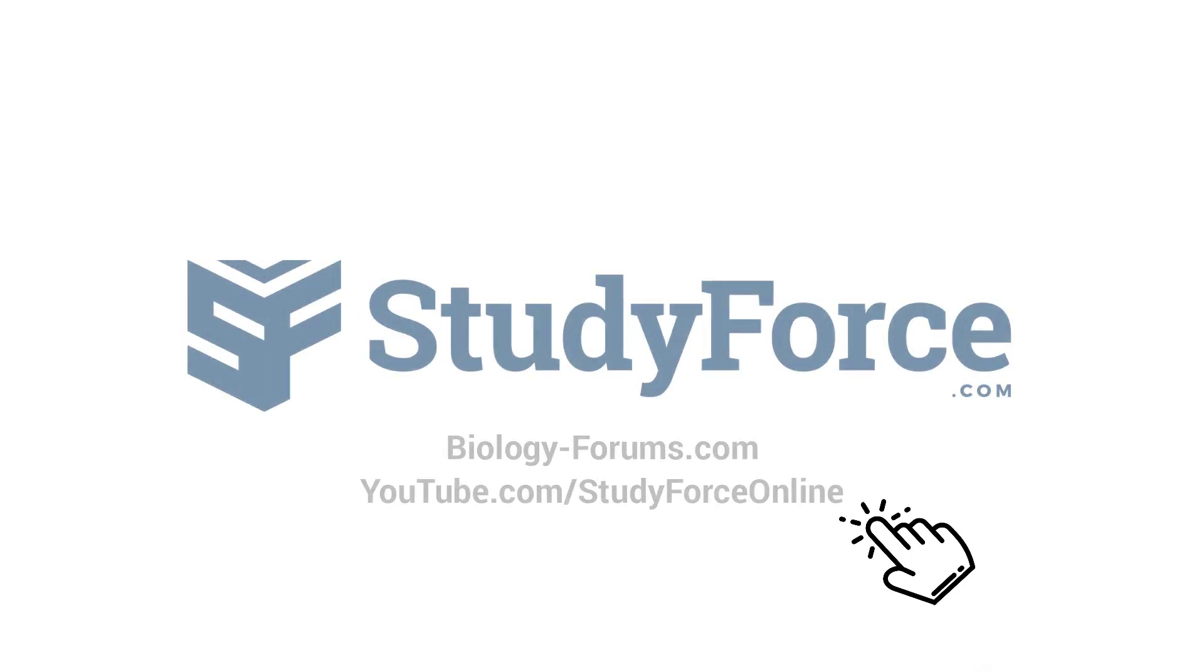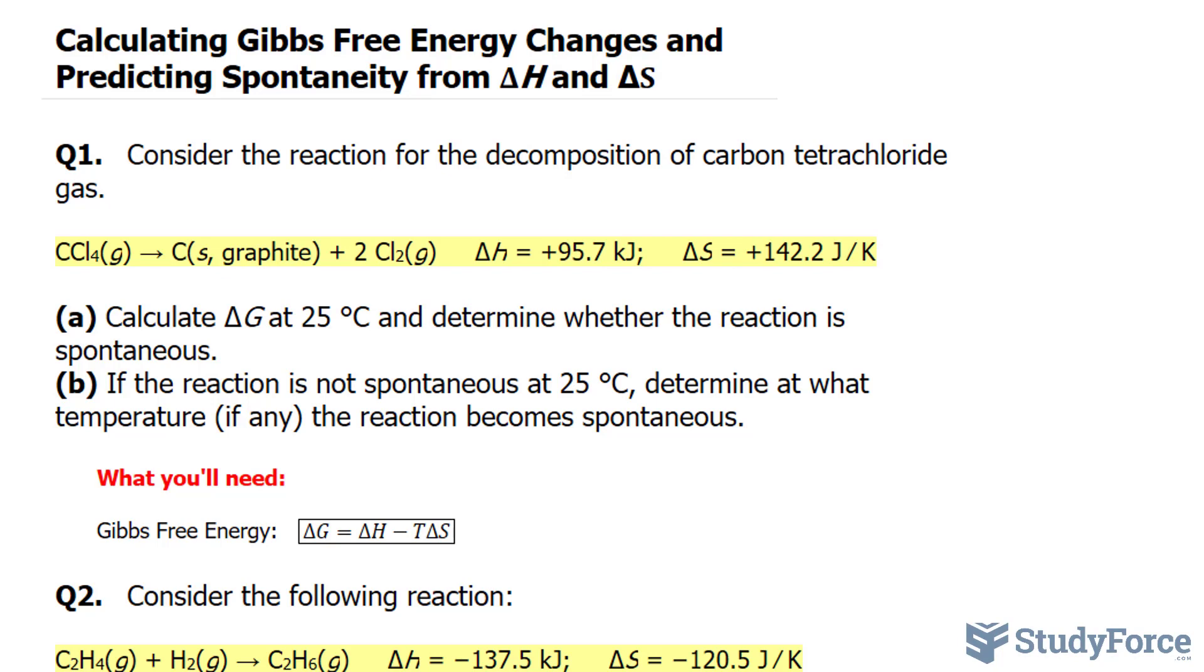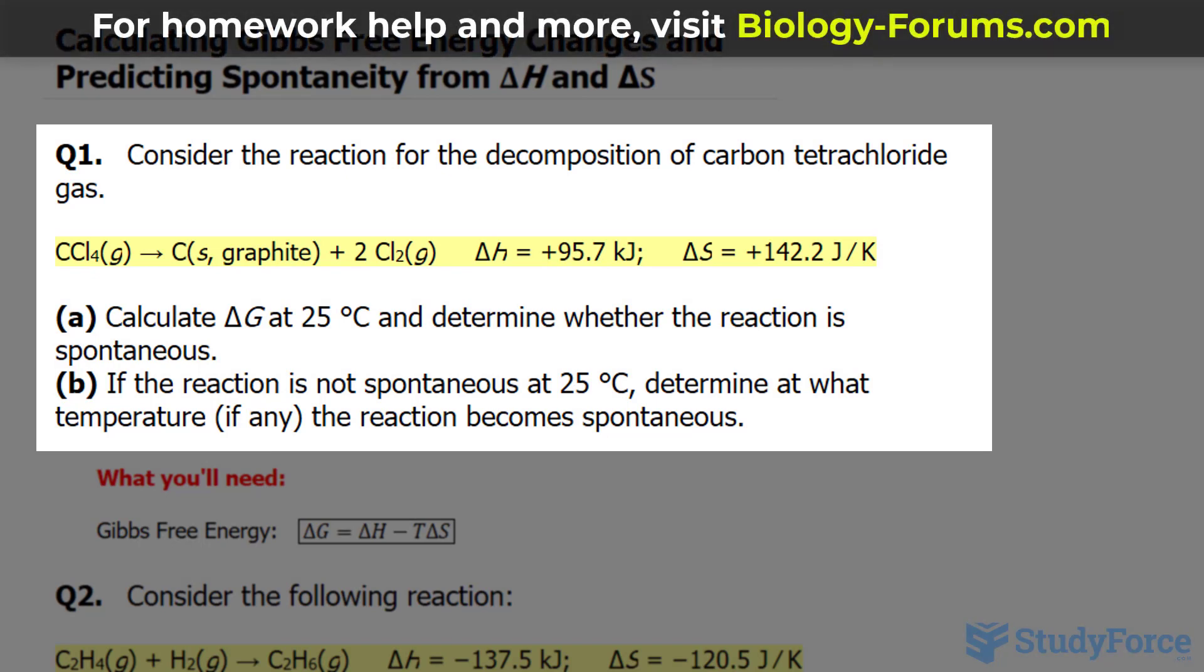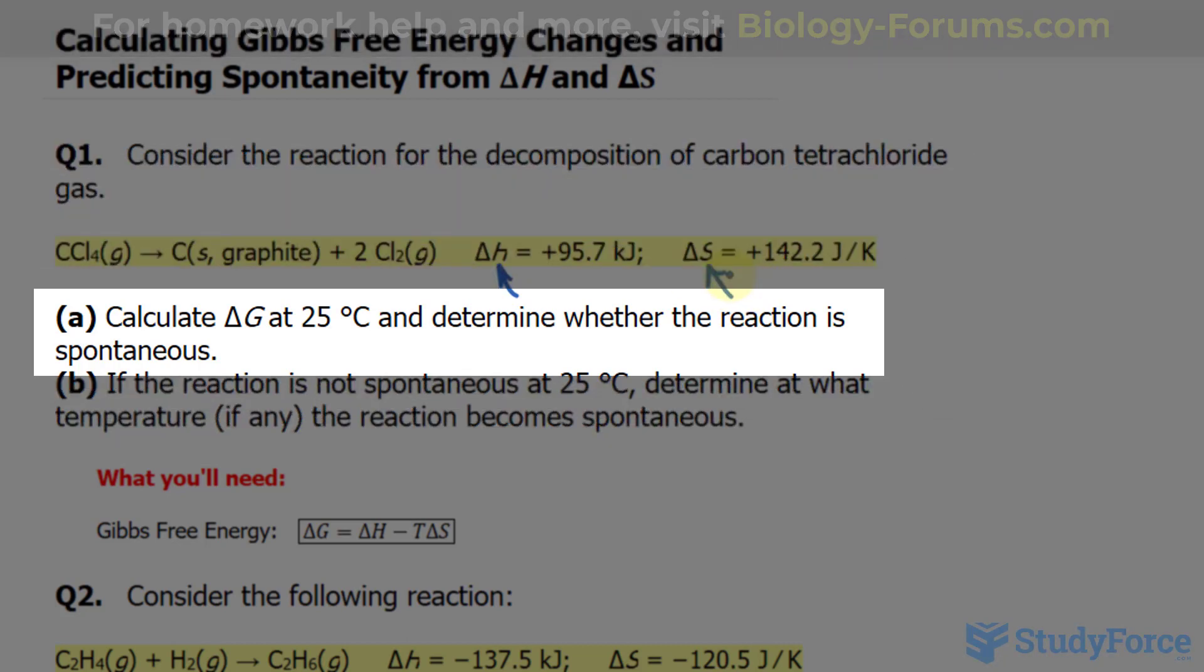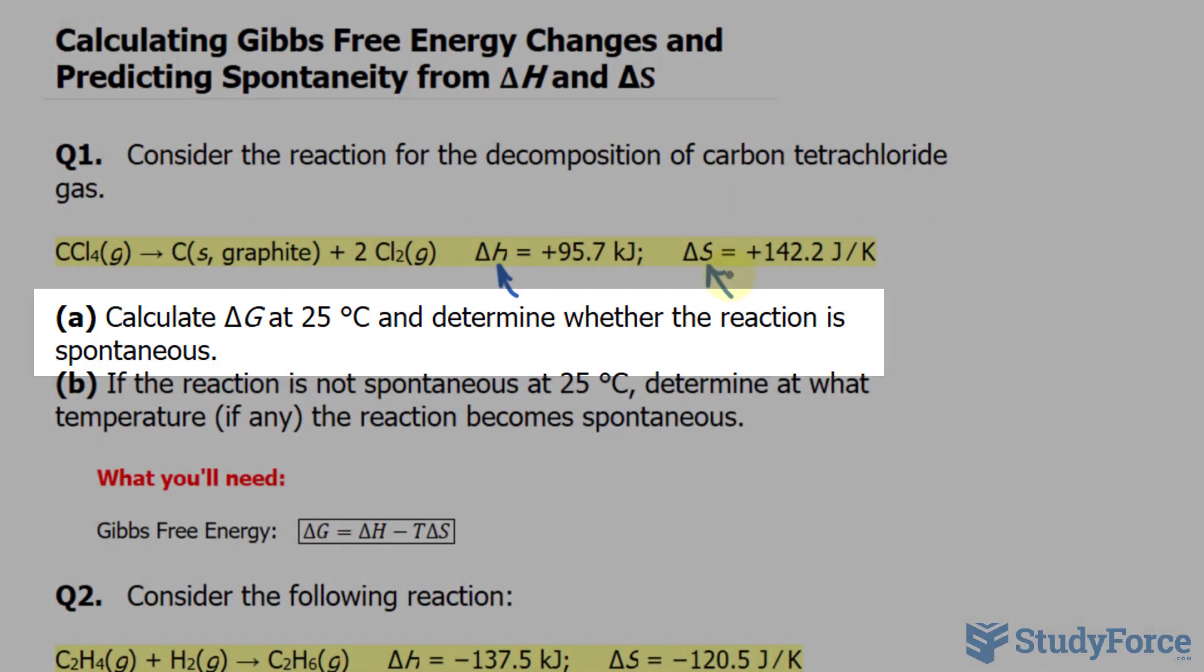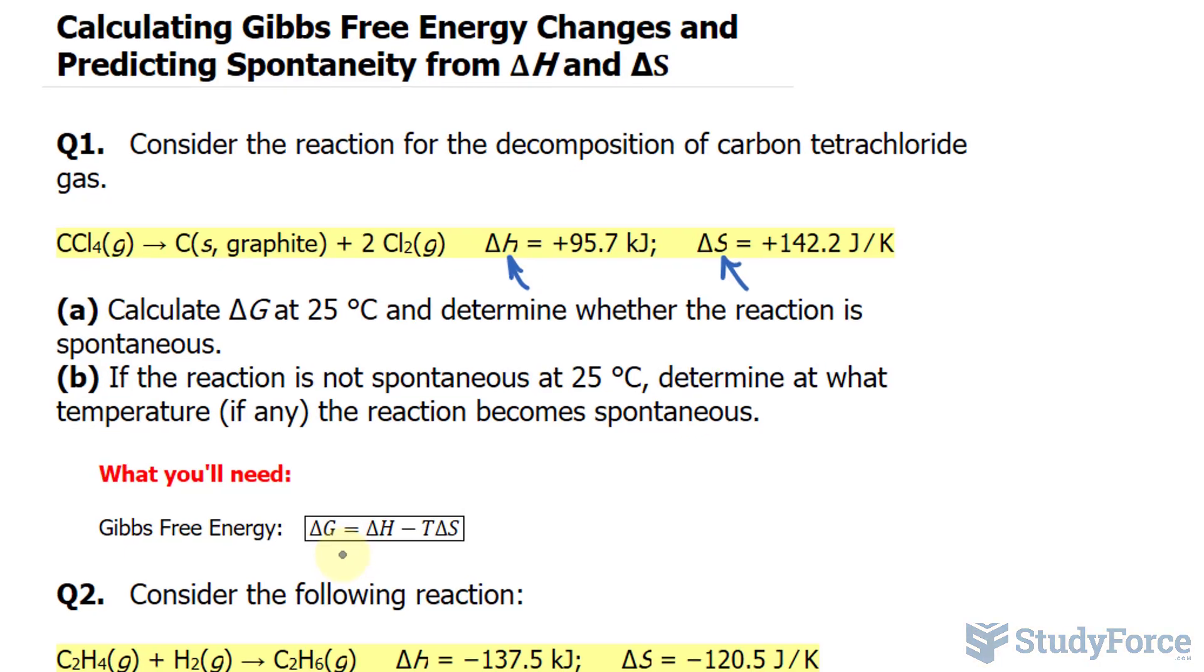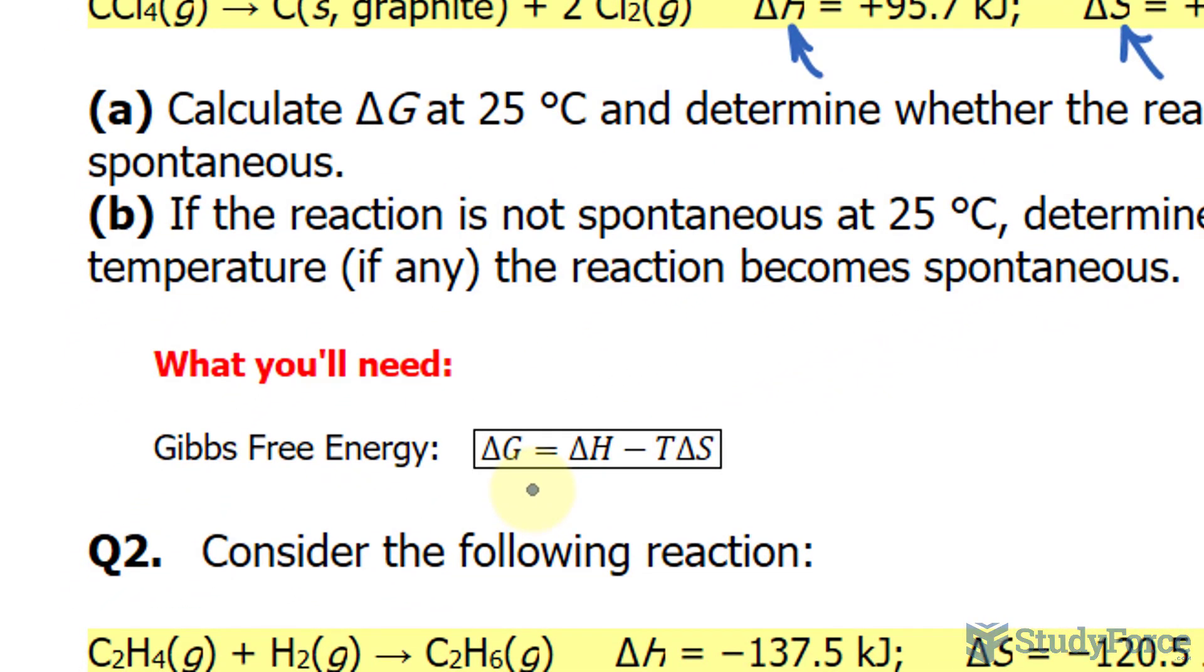In this lesson, I'll show you how to calculate Gibbs free energy and predict spontaneity from delta H and delta S. The first question reads: consider the reaction for the decomposition of carbon tetrachloride gas. Notice that we've been given delta H and delta S. Calculate delta G at 25 degrees Celsius and determine whether the reaction is spontaneous. Before we begin answering, it's important to note that a reaction is spontaneous if Gibbs free energy is negative. So be mindful of that. The formula we'll be using is shown right here, where delta G is equal to delta H minus T times delta S. And in case you're not familiar, delta H is the change in enthalpy and delta S is the change in entropy. So let's begin.